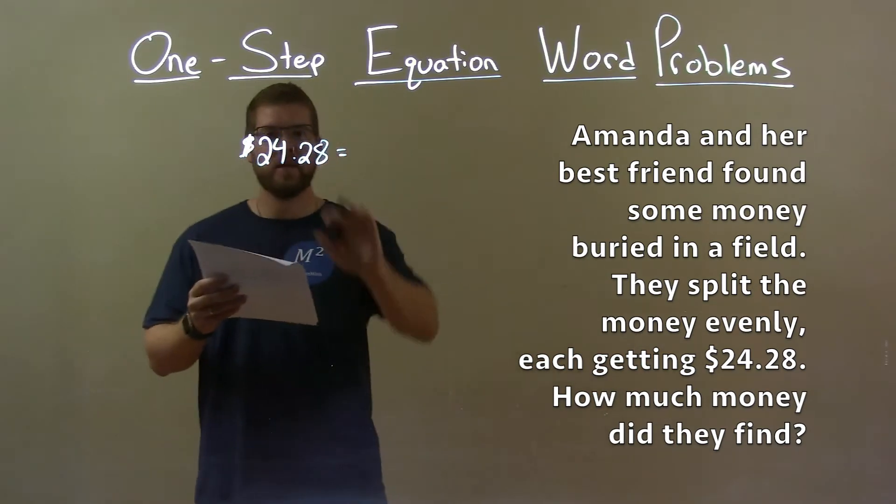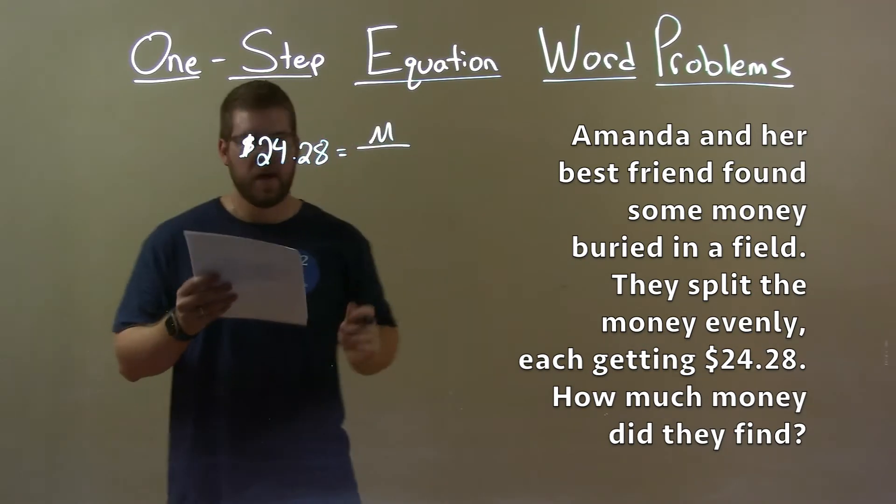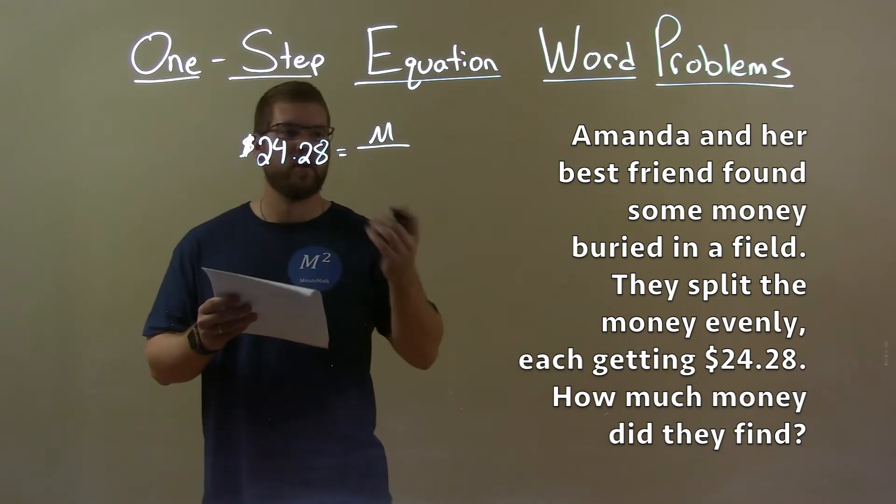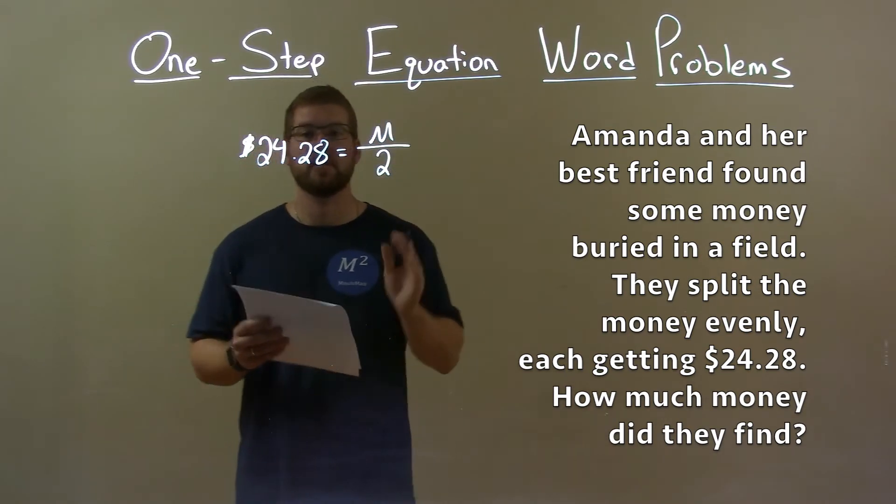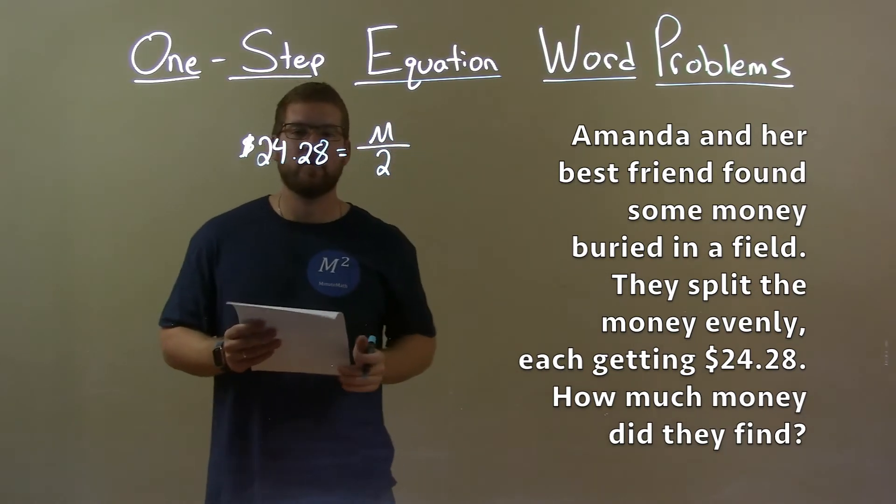Now, that amount is equal to the total amount that they found, which we don't know, so we label it M. And they said that total amount was divided evenly. Well, there's two of them, Amanda and her friend, so we divide that by 2. So now we have the total money found divided by 2 equals $24.28.